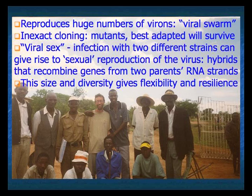The virus can mutate, and that's how you get different subtypes and different strains within subtypes. When the virus reproduces, it produces millions of virus particles — virions — creating what's called a viral swarm. During this process you get inexact cloning, producing different mutants. The ones best adapted to survive in the host carry on and reproduce; those that aren't well adapted will disappear and die off.